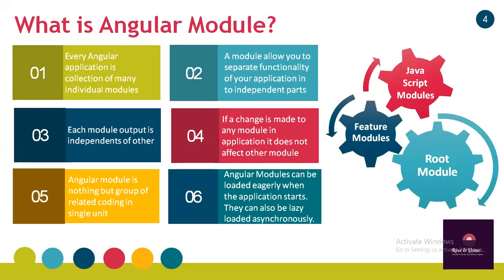Sometimes modules are also loaded lazily and asynchronously. As this figure represents, there are so many types of modules in any Angular application. An Angular app module is a group of related code in a single unit, and such a unit can be imported into or exported from an application. At the end of the day, an Angular module is code that interacts with each other to render the view of an application in the web browser.